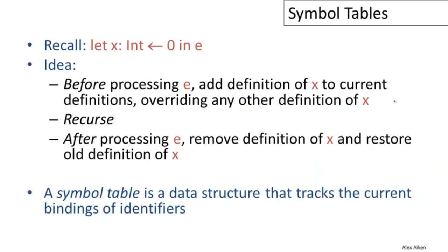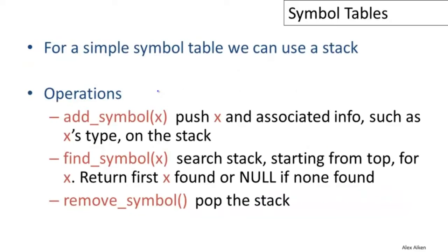In the three-part recursive descent algorithm: before processing E, we add the definition of X to our list of current definitions, overwriting any other definition of X visible outside. Then we recurse into the body. After finishing E, we remove the definition of X and restore the old definition. A symbol table is a data structure that tracks the current bindings of identifiers at each point in the abstract syntax tree.